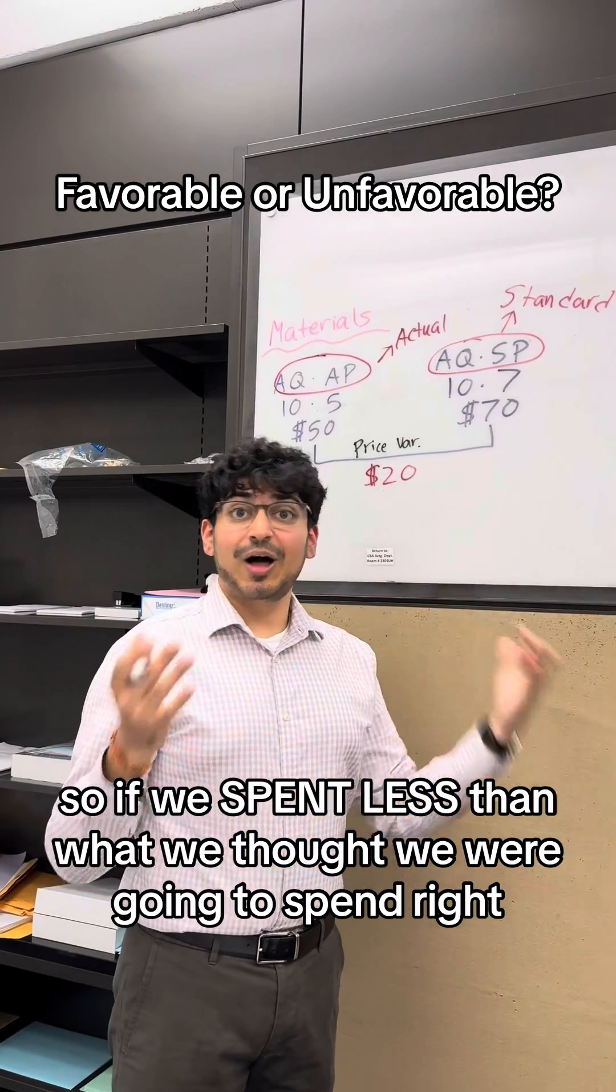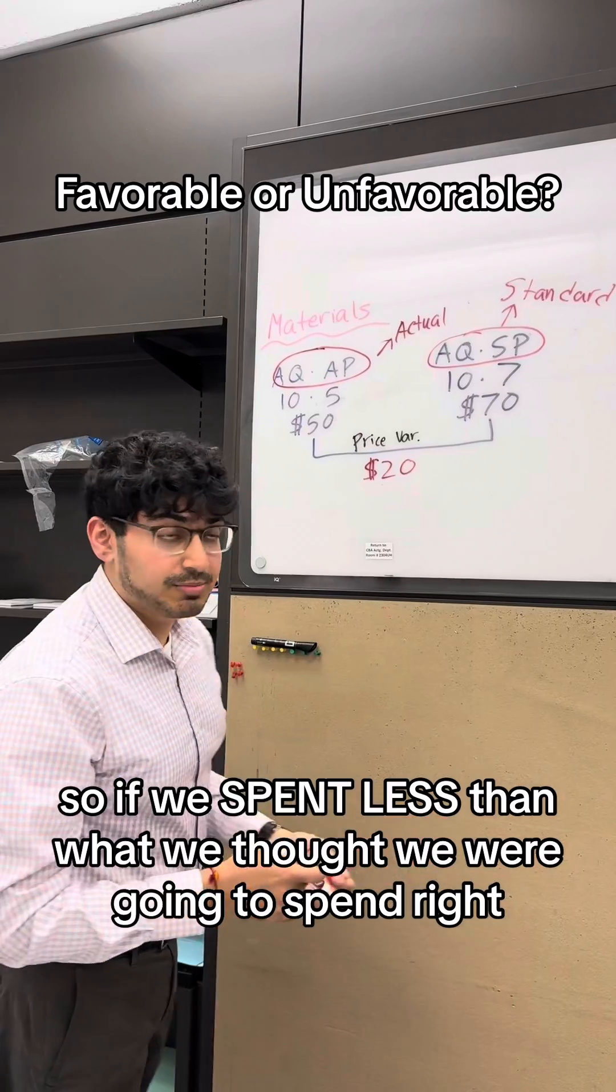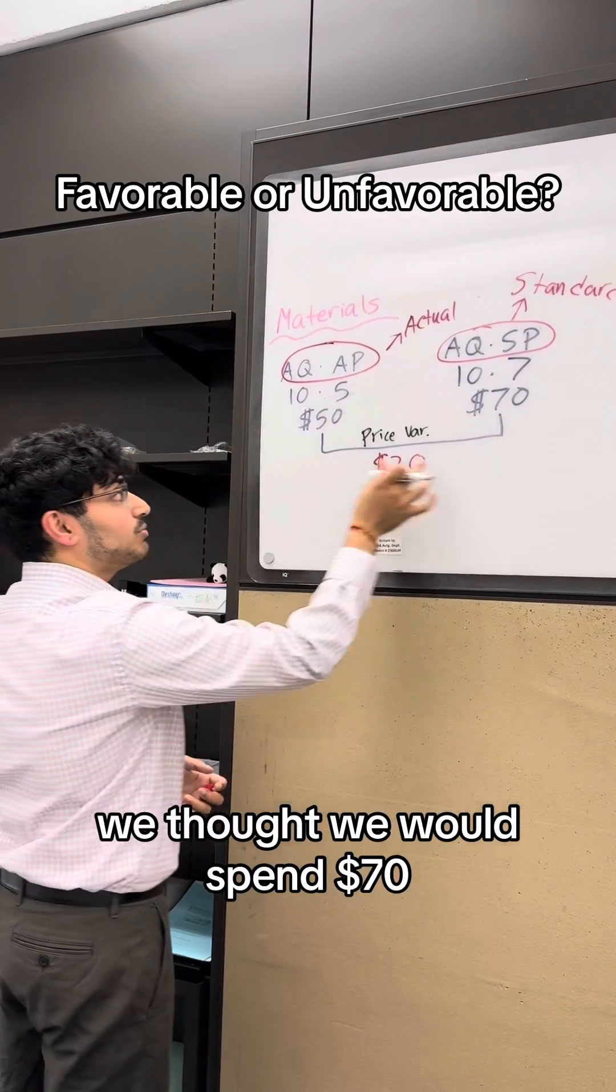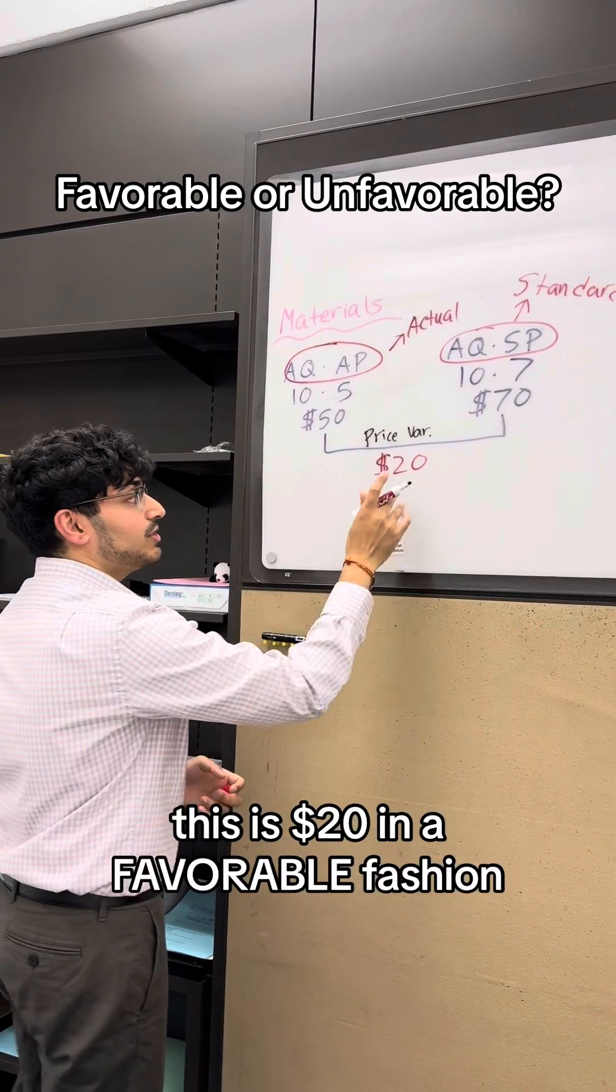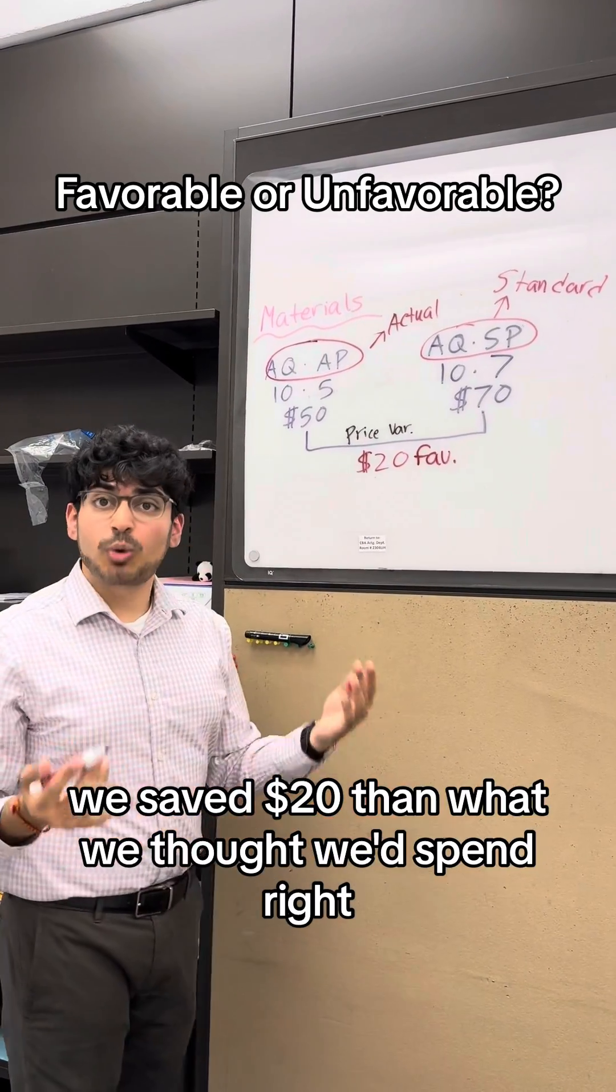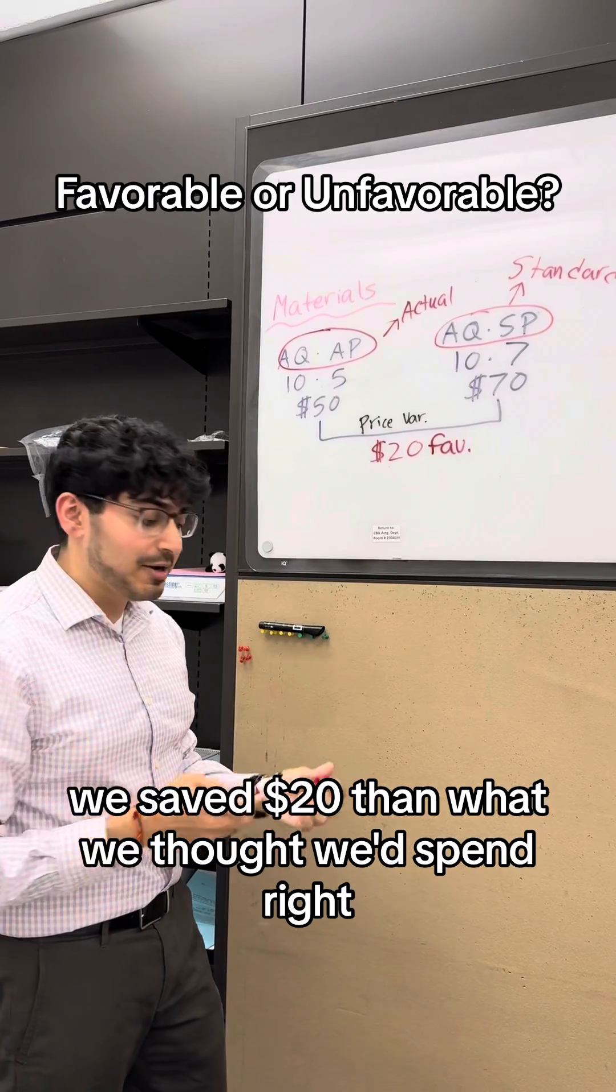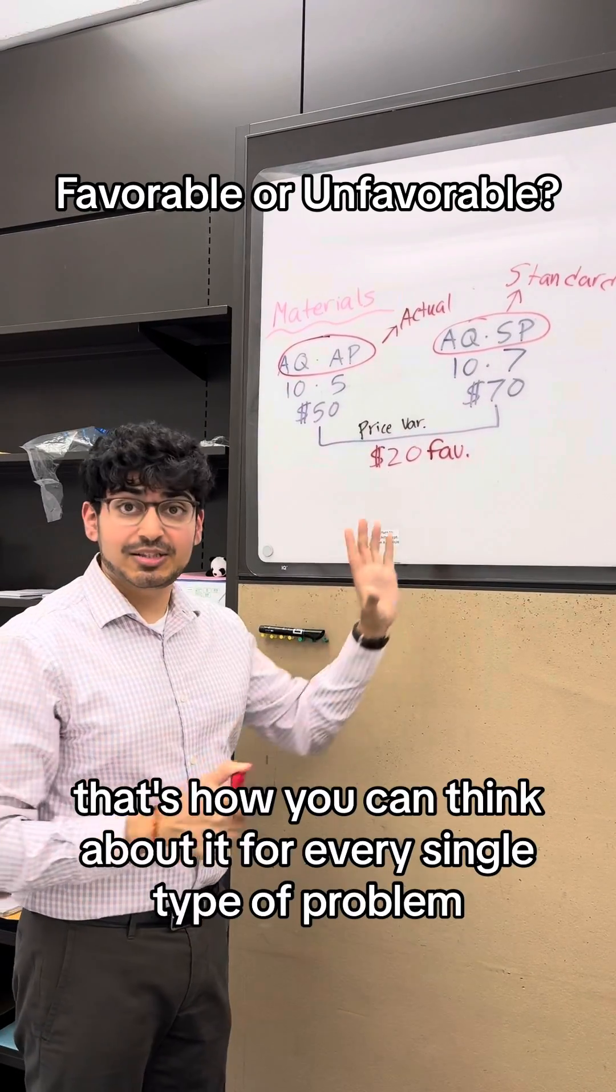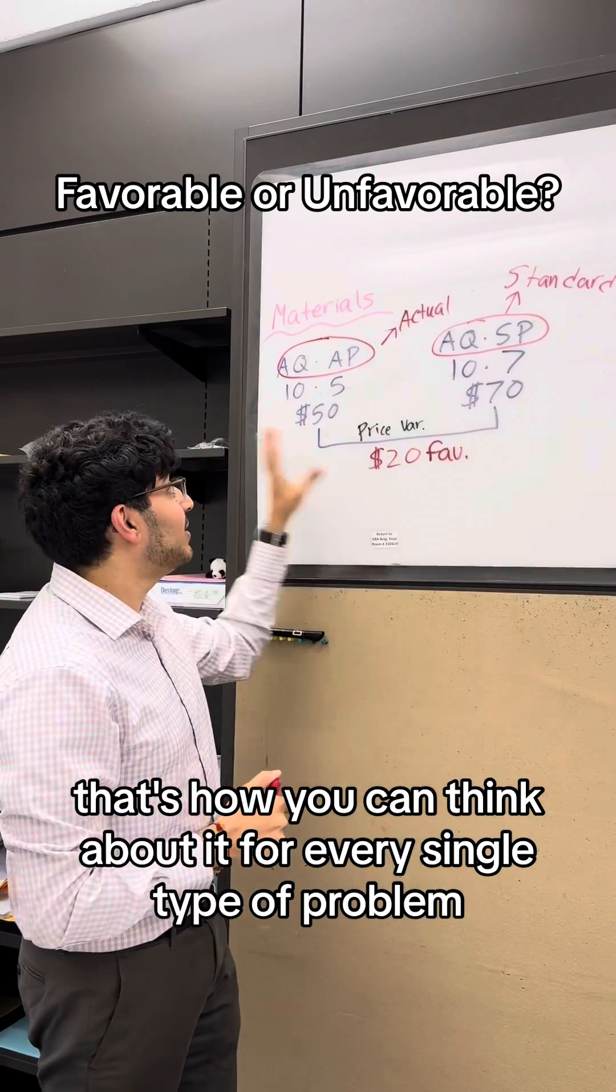So if we spent less than what we thought we were going to spend, right? We thought we would spend $70, we spent $50. This is $20 in a favorable fashion. We saved $20 than what we thought we'd spend, right? So that's essentially it. That's how you can think about it for every single type of problem.